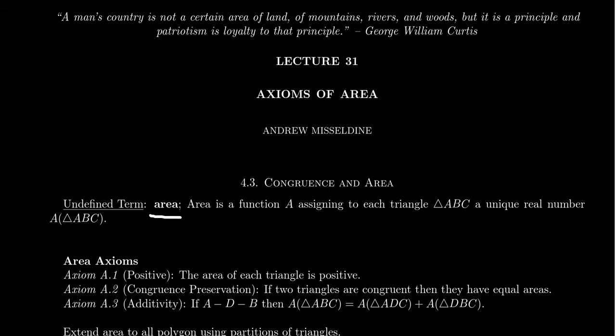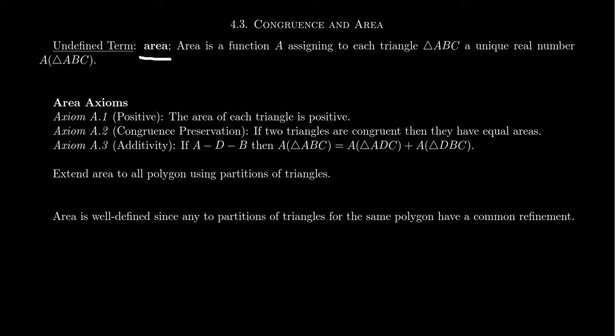I want to talk about area in general congruence geometry before we talk about area of hyperbolic geometry in the next lecture. With this undefined term area, we try to make meaning out of it using our axioms. By area, we mean a function from triangles in a congruence geometry to a unique real number, which if the triangle is denoted ABC, we'll call the area of triangle ABC. We'll often use A to denote the area when it's clear from context. We have to define axioms so we can understand what this undefined term means. For area, there are essentially three axioms.